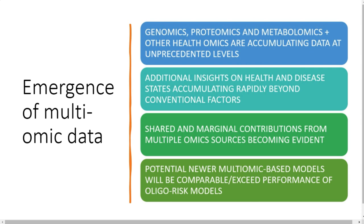Because of these additional advances and capabilities, we are gaining insights on both health and disease states beyond what is traditionally known with conventional factors, which are largely limited to single-plex data and limited demographic information. The expansion in the omic data space really allows us to glean additional information and insights. This also allows us to explore what's shared in terms of contributions from multi-omics — you'd expect some overlap despite these being independent technological methods. There are shared elements in contributions to disease and health, as well as marginal independent contributions becoming more and more evident. Multi-omic-based models could potentially exceed the performance of existing oligo-risk-factor-based models.